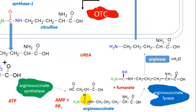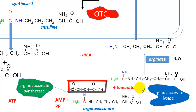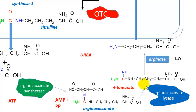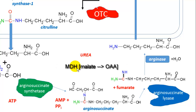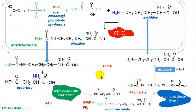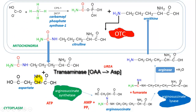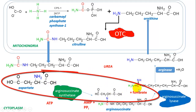The enzyme arginosuccinate synthetase joins citrulline and aspartate in a reaction requiring ATP, producing the adduct molecule arginosuccinate. This large adduct is unstable and is cleaved by arginosuccinate lyase, yielding fumarate and the amino acid arginine. In the cytoplasm, fumarate is converted to malate by cytoplasmic fumarase, then to oxaloacetate by malate dehydrogenase, and finally transaminated back to aspartate — creating a self-perpetuating mini-cycle within the urea cycle.